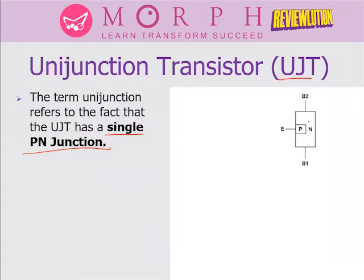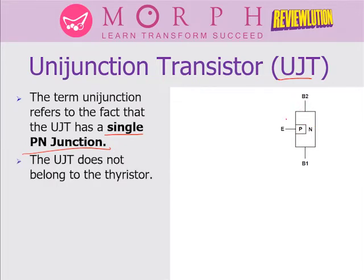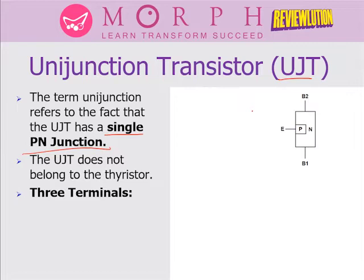This is the layer diagram of the Unijunction Transistor or UJT. The P is surrounded by the N, and that becomes the only PN junction of our UJT. This UJT does not belong to the thyristor family because it only has one junction, but it has three terminals. That's why it's considered a transistor, but it's not really a transistor because it's not a PNP or NPN device — it's a PN device. It's also not a diode because it has three terminals. The terminals of the UJT are referred to as the emitter, base 1, and base 2.